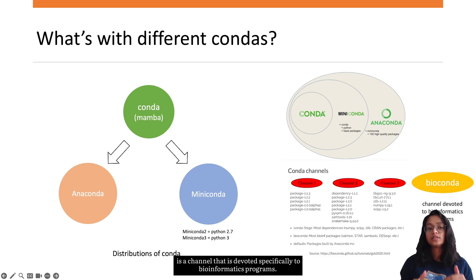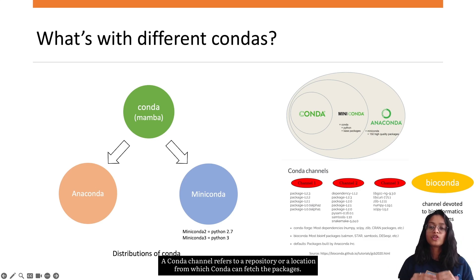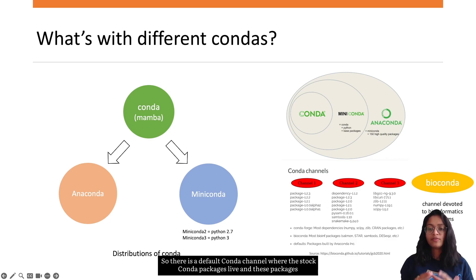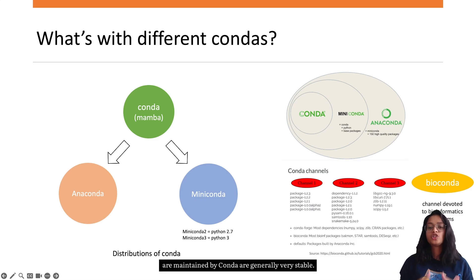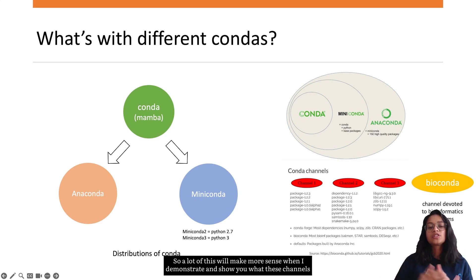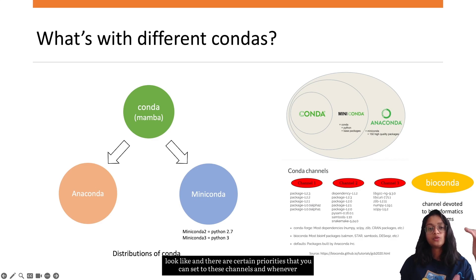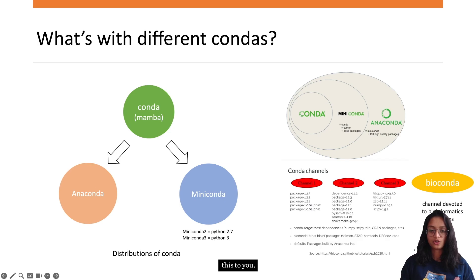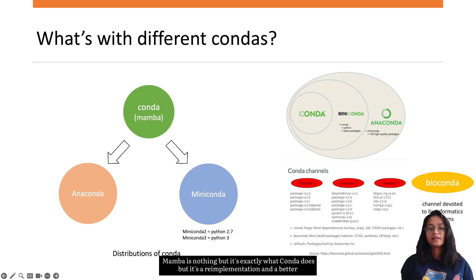Conda installs programs from repositories called channels. Bioconda is a channel devoted specifically to bioinformatics programs. A conda channel is a repository or location from which conda can fetch packages. When a package is uploaded to conda it must be uploaded to a specific channel, which is just a separate URL where those packages reside. There is a default conda channel where stock packages are maintained and are generally very stable. You can set priorities for these channels so conda looks at a high-priority channel first when resolving package conflicts.